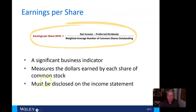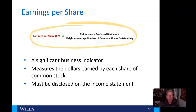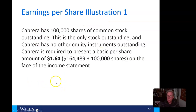Finally, earnings per share. One thing to watch out for: you might think EPS is simply net income, but we back out preferred dividends because those are not available to common stockholders. So this is net income available to common stockholders divided by the weighted average number of common shares outstanding. It's a significant business indicator that measures dollars earned by each share of common stock, and it must be disclosed on the income statement. That looks like a good place to stop this video. When we return, we will look at some examples of earnings per share. Bye for now.